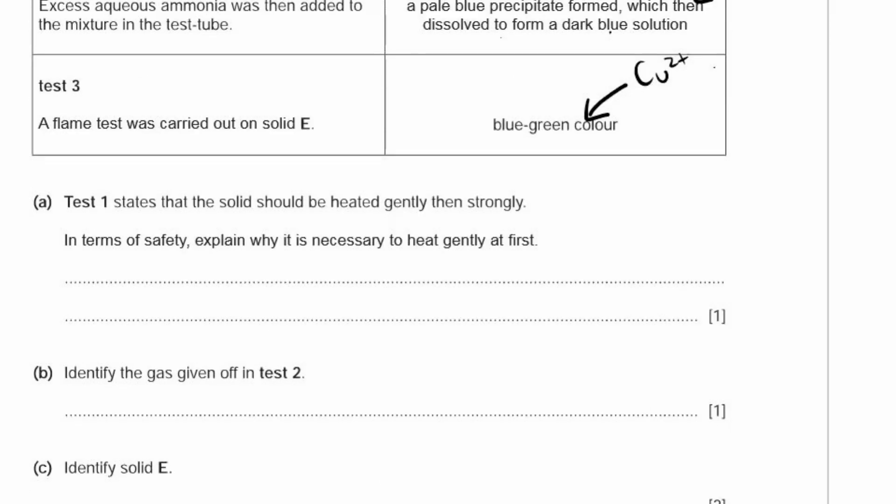A. Test 1 states that the solid should be heated gently and then strongly. In terms of safety, explain why it is necessary to heat gently at first. There's a couple of reasons. Might be that the solid spits out of the tube. Another possible reason is that if you heat a cold test tube strongly, it might crack. Choose one of these. You can say either the solid will spit out of the tube, or the test tube might crack because you're heating it from cold to really hot very suddenly, and glass will crack in that situation.